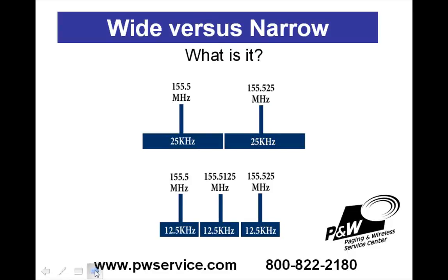In this video we're going to take a look at narrow versus wideband pagers. The graphic here illustrates the differences. This is a channel and this is another channel. In this example it's channel 155.5 MHz and the adjacent channel is 155.525 MHz. Each channel is 25 kHz wide, meaning there's a transmission that extends the whole 25 kHz. There's really no gap between the two channels — they butt up against each other. The purpose of a receiver is to receive just that block of frequency, and all receivers have a built-in band limiter. In this case it's 25 kHz.